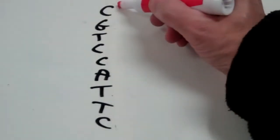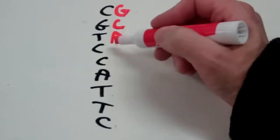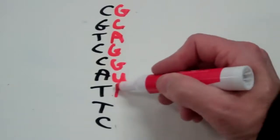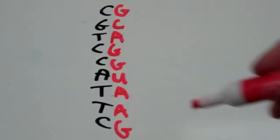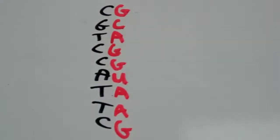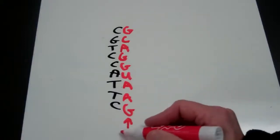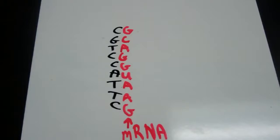So I would have G for guanine, C, A, G, G, U, A, A, and G. So this is my messenger RNA. Messenger RNA comes into the nucleus and copies the DNA to RNA code. So that's my messenger RNA.